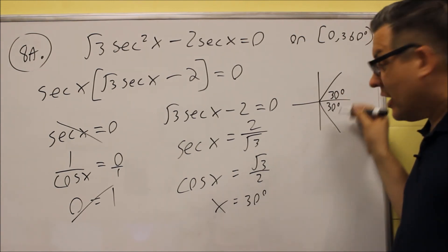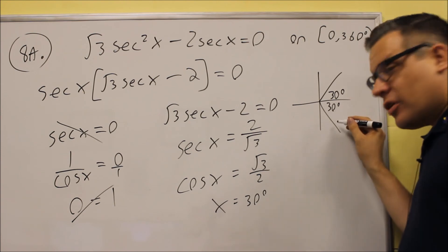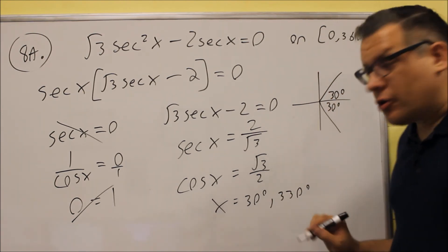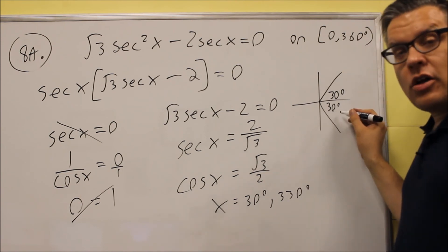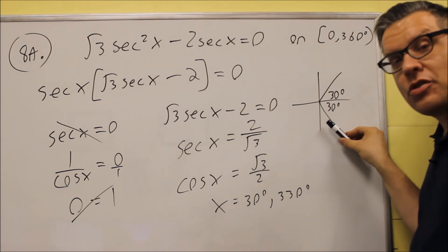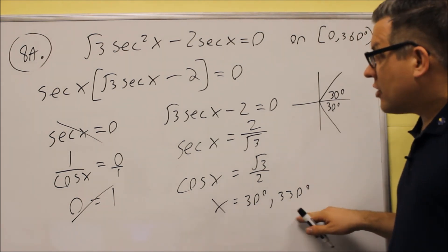And then the reference angle, you would have really 30 degrees down that way as well. 30 degrees up and 30 degrees down. Now if you go 30 degrees down, you are going to get 330 degrees will be the one down in the fourth quadrant. So if you go that way from 360, we are just going to go back this way 30 degrees and you will get 330.